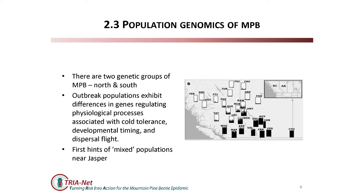These animals have been typed using a medium-density SNP array, meaning they've been typed at a bunch of genetic markers probably near genes we're interested in. There are some interesting differences in the outbreak regions - signatures of different gene frequencies associated with things like cold tolerance, developmental timing, and dispersal flight. So potentially those are candidates for being adapted, and maybe that has something to do with their ability to expand. There are differences between north and south, and the Jasper region shows an admixture of those two types - the suture between the northern and southern population structure clusters.